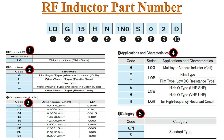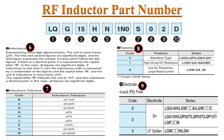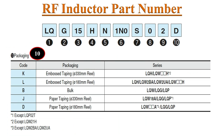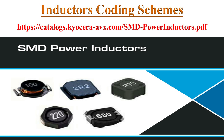The part number of an RF inductor indicates its specifications, including structure, applications, category, inductance value in three digits, tolerance, and packaging information. To know more about SMD power inductor specifications, please refer to the link shown on screen, which is also given in the video description.